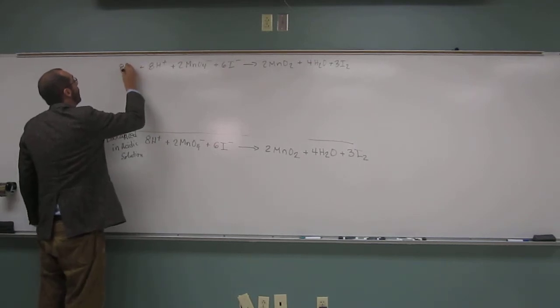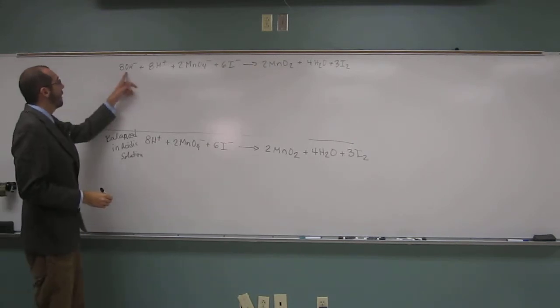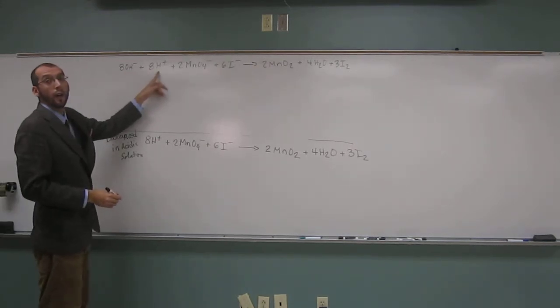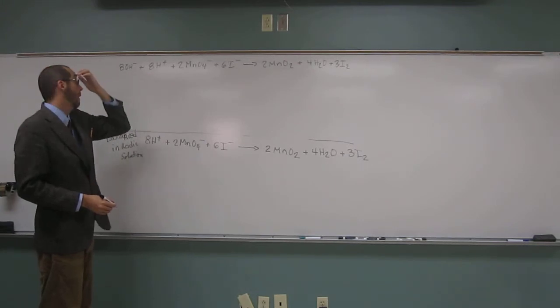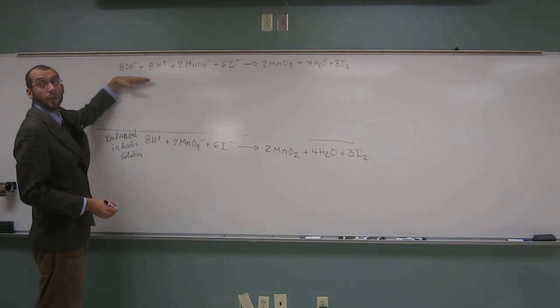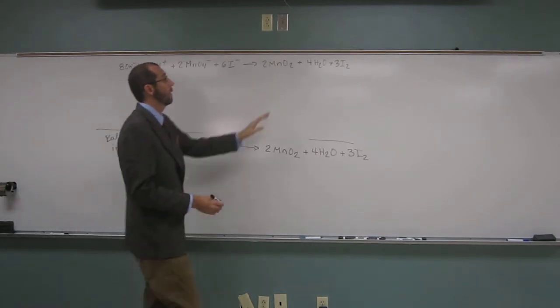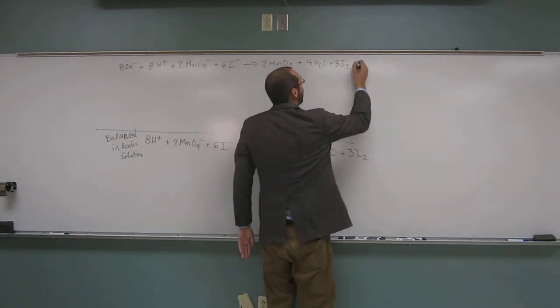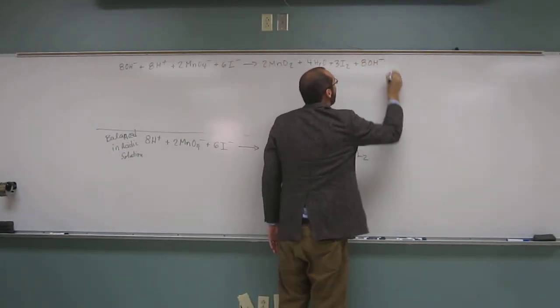When you have hydroxide and H pluses, they combine to make water molecules. The other thing we want to remember is what we do to one side of the equation, we have to do to the other side of the equation. So what are we going to do over here? Eight OH's. Yeah, add eight OH's, very good.